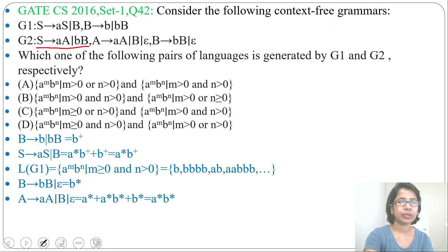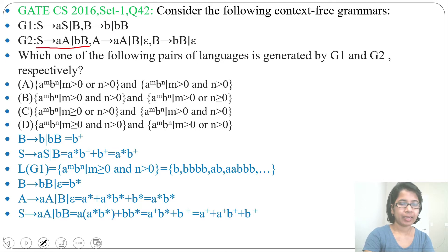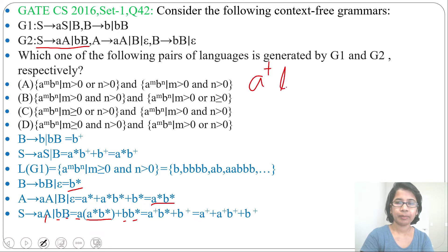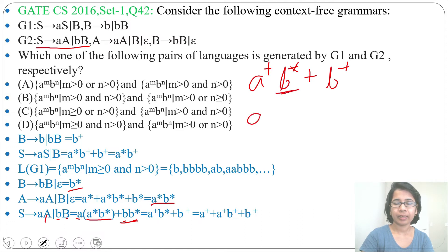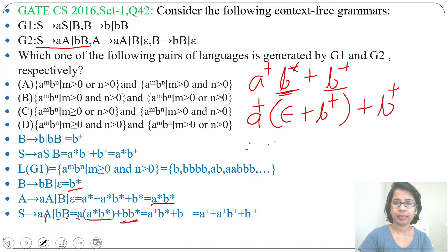Now let's analyze the S production of G2: S tends to AA or BB. For AA, from A you can generate A Kleene closure B Kleene closure, so write A then A Kleene closure B Kleene closure. For BB, from B you can derive B Kleene closure, so write B then B Kleene closure. After concatenation it will be A positive closure B Kleene closure plus B positive closure. You can expand A positive closure B Kleene closure as A positive closure times (epsilon plus B positive closure).